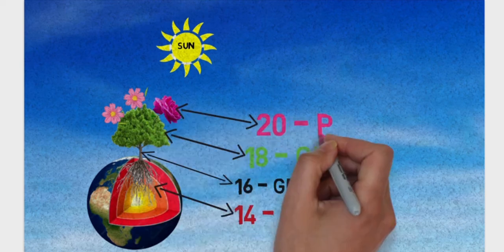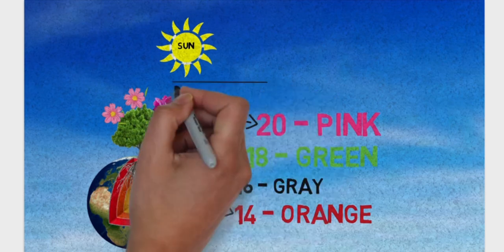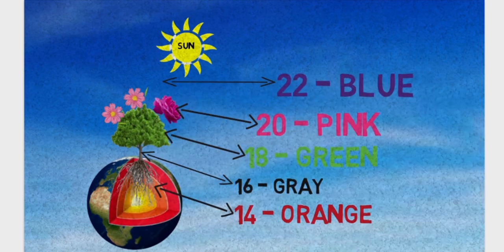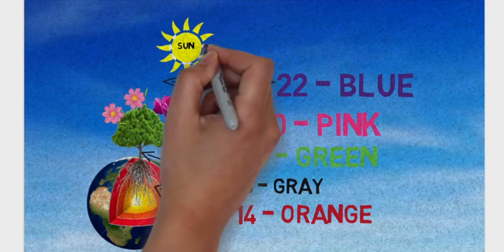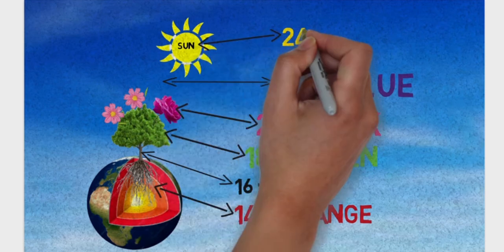Gauge 20 is pink in color, the flowers of the tree are pink as well. Gauge 22 is blue in color. Well, the sky is blue. Gauge 24 is yellow in color, you will remember it by the yellow color of the sun.